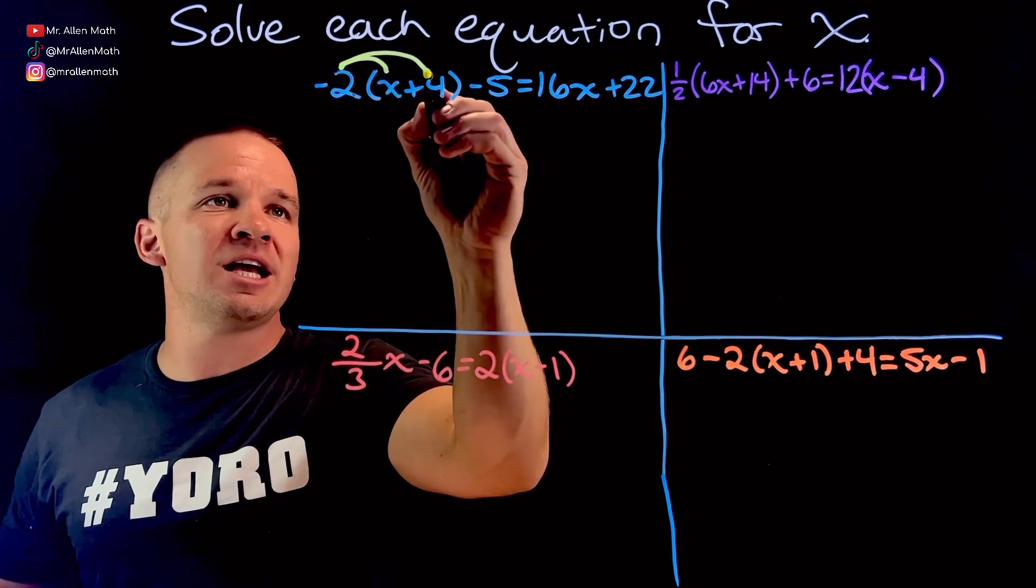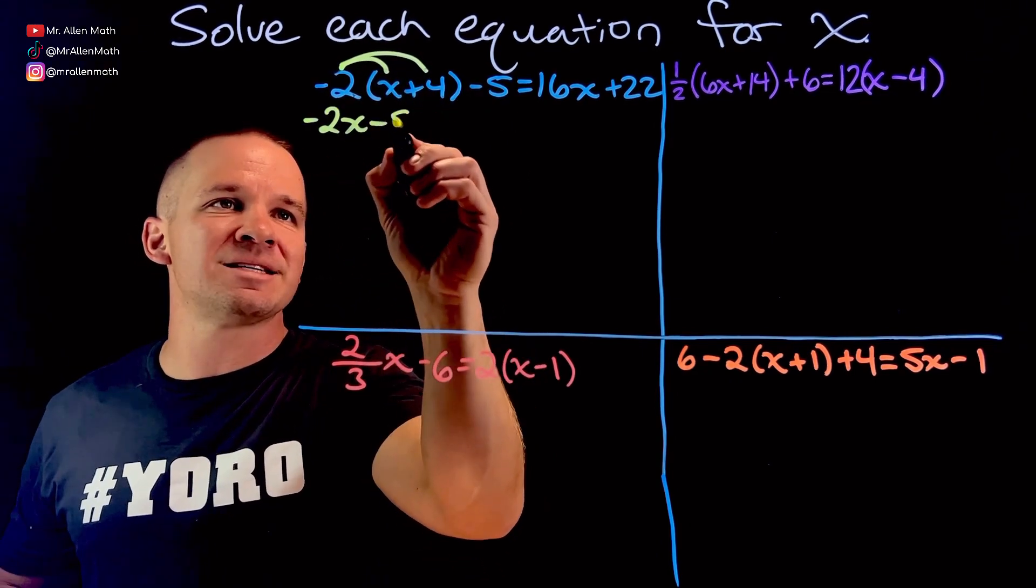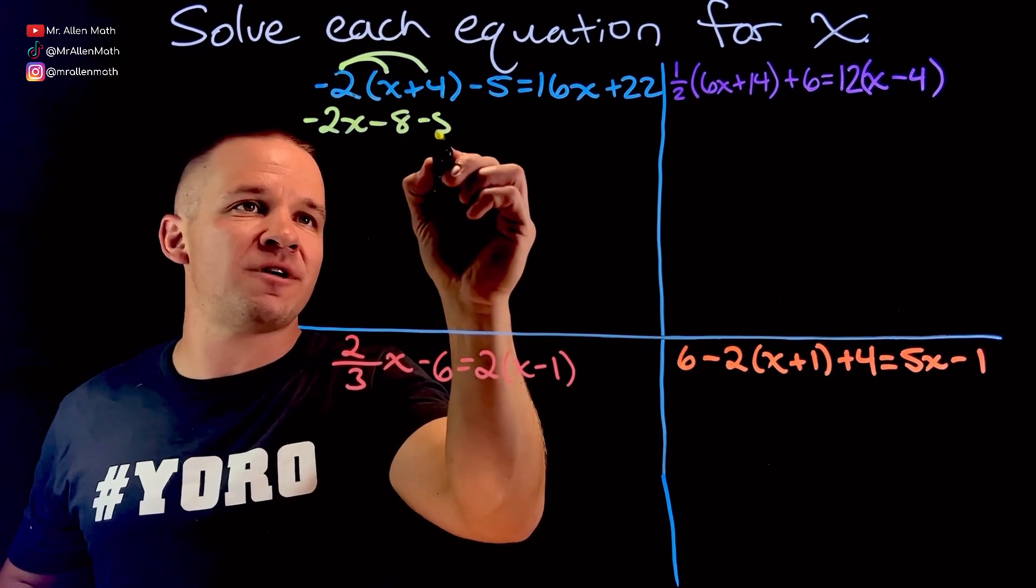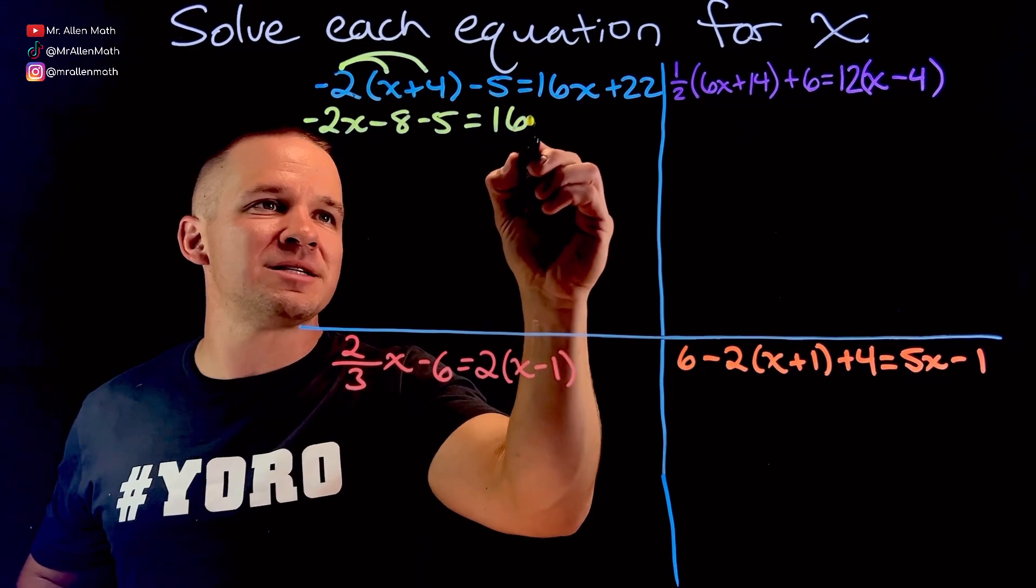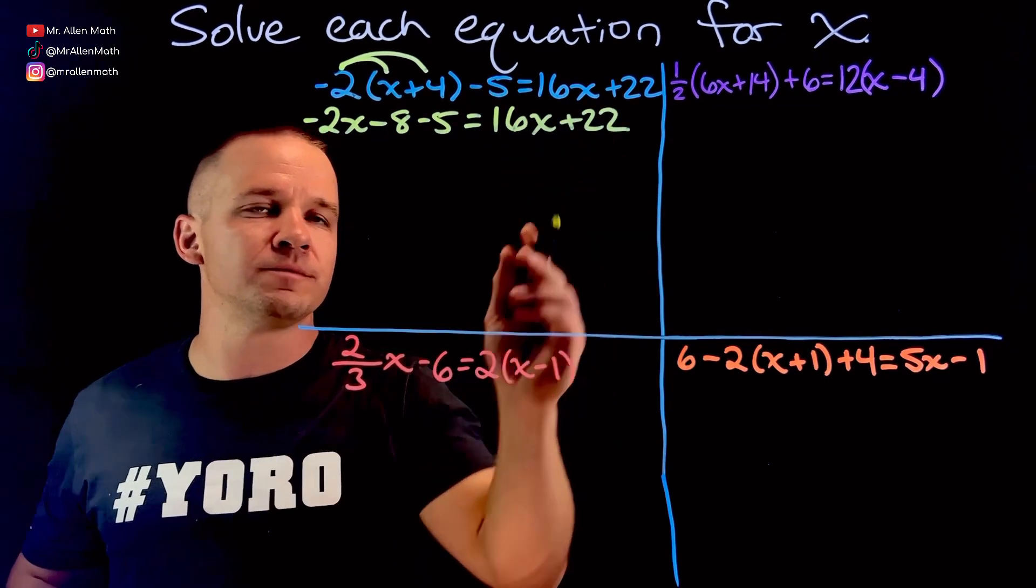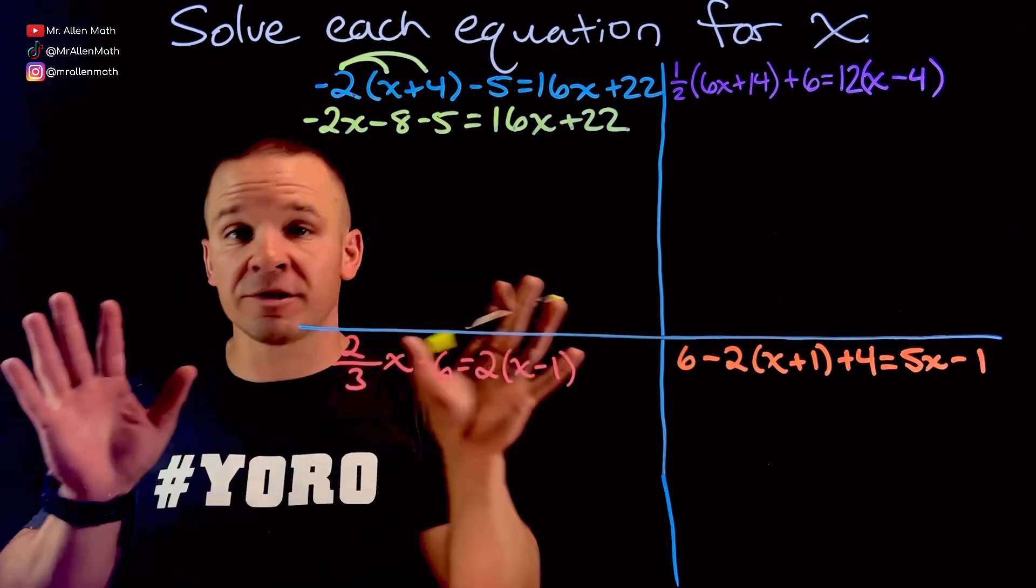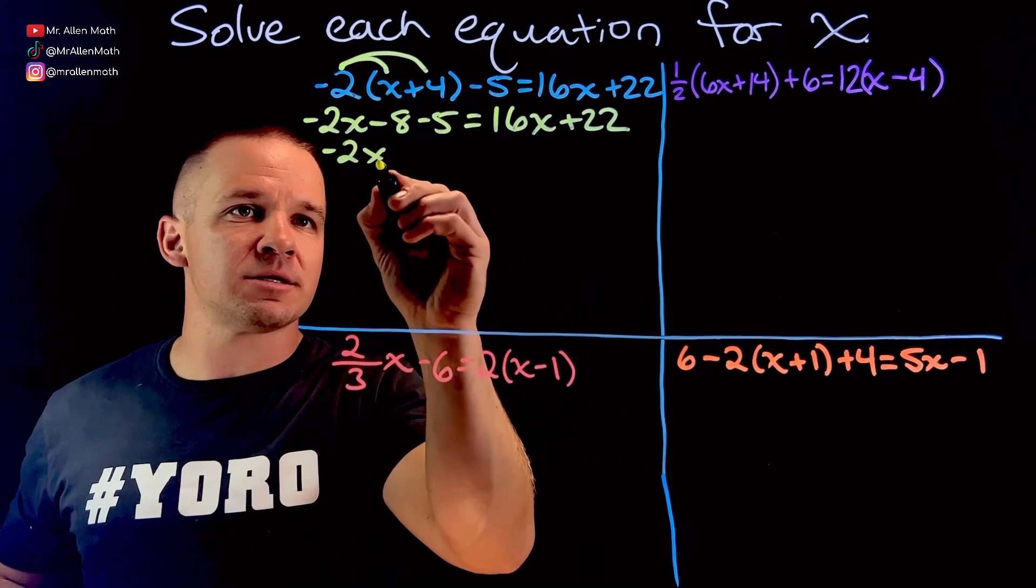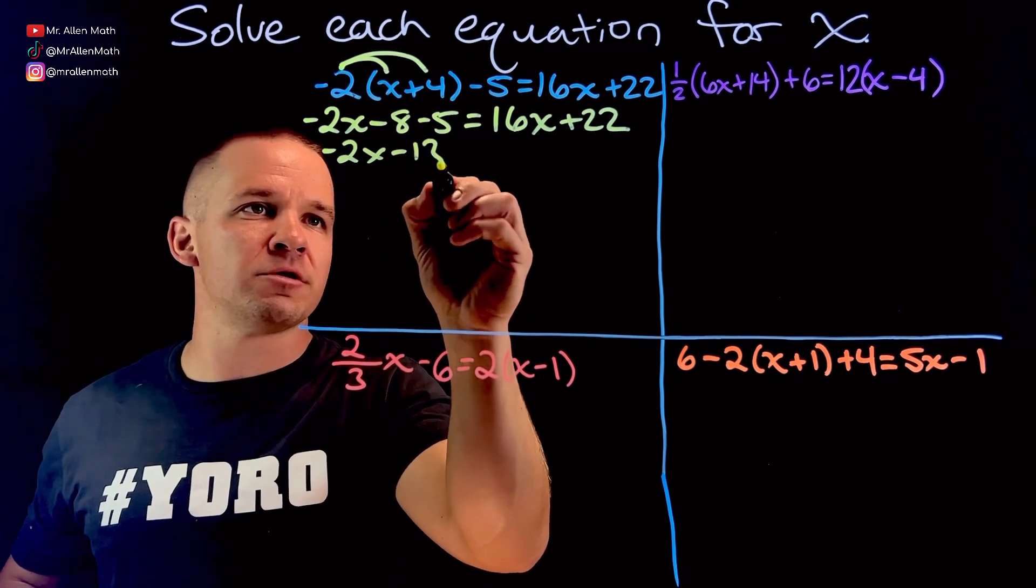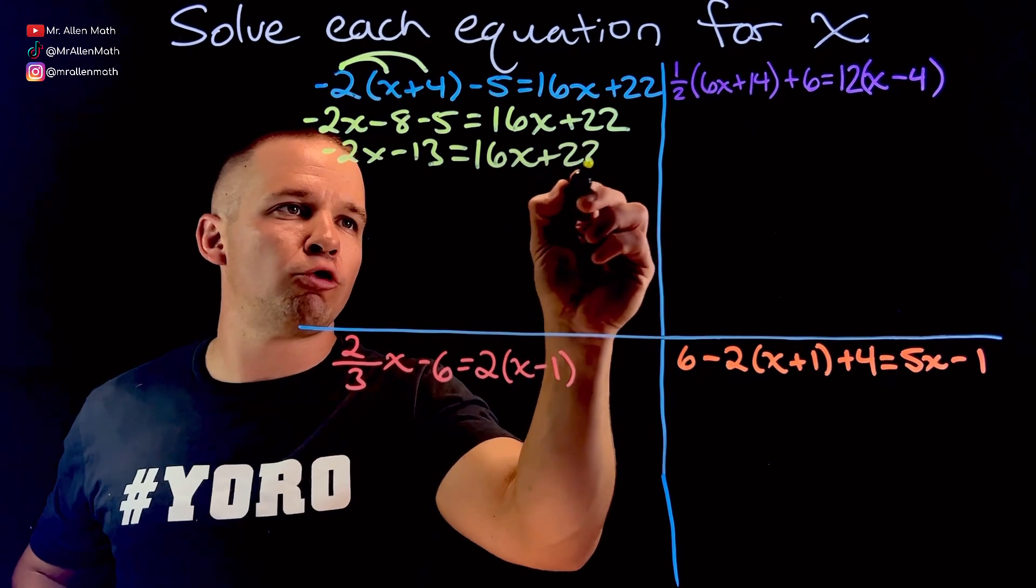First thing here, I'm going to distribute this negative 2 into my parentheses, and I got myself negative 2x minus 8, still have the minus 5, equals nothing to do over here on the right-hand side, so we'll make it 16x plus 22. Now I'm going to combine my like terms on the left-hand side, and then I'll start moving things from side to side. So we get negative 2x, then we have minus 13, equals 16x plus 22.